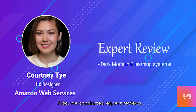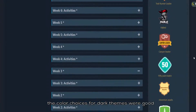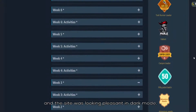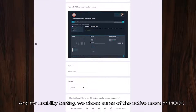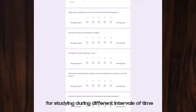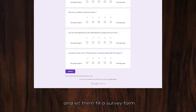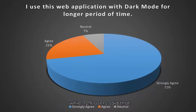We also conducted expert reviews, asking for feedback from Mistai, a UX designer at Amazon Web Services, and Mr. Siluwal, a UI/UX designer at Express Studios. We got feedback that the color choices for dark mode were good and the site was looking pleasant in dark mode, along with some other recommendations. For usability testing, we chose active users of MOOC and let them use our system for studying at different intervals of time, then had them fill out a survey. In our results, 79% of the users strongly agreed that dark mode helped reduce eye strain, while 72% said that they would use the system for longer periods of time.